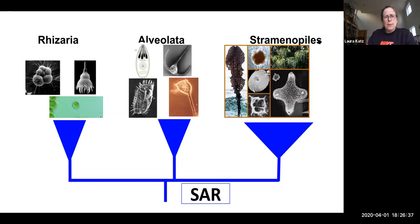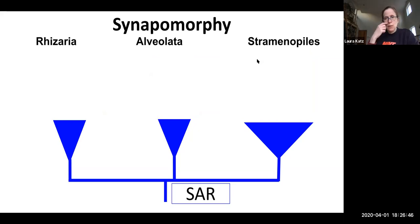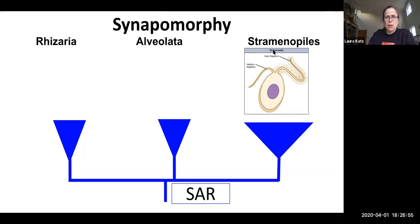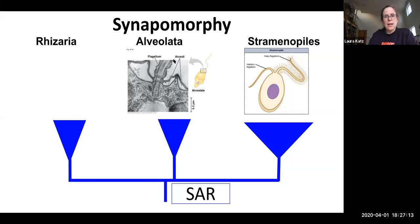So who are the SAR? You probably know by now there's Stramenopiles, alveolates, and rhizaria, and we're going to dig a little bit today into Stramenopiles. Then you might ask, what's the synapomorphy for SAR? Well, Stramenopiles have a synapomorphy. It's Stramenopiles, it means hay, like they have two flagella, most eukaryotes do, and one of their flagella has little fur on it. So that's the synapomorphy for Stramenopiles is having the second hairy flagellum.